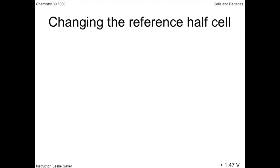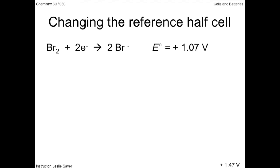So if the reference half cell has been changed to the copper half reaction, what is the bromine half reaction potential now? This is the bromine reduction half reaction as shown in your data booklet. The positive 1.07 volts is the electrical potential when the hydrogen half reaction is used as the reference half reaction. This is copper's half reaction, and its half reaction potential when hydrogen is the reference half cell is positive 0.34 volts.